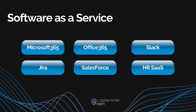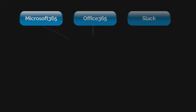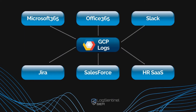The second scenario is Software as a Service. Infrastructure is one thing, but each organization nowadays is using at least one major software as a service — for example, Microsoft 365, or Office 365, Slack, Salesforce, or a locally-specific HR software as a service. Events from all of these systems need to also be aggregated and correlated with the Google Cloud Platform logs, allowing the organization to have a 360-degree view of the IT landscape, not just the cloud infrastructure.